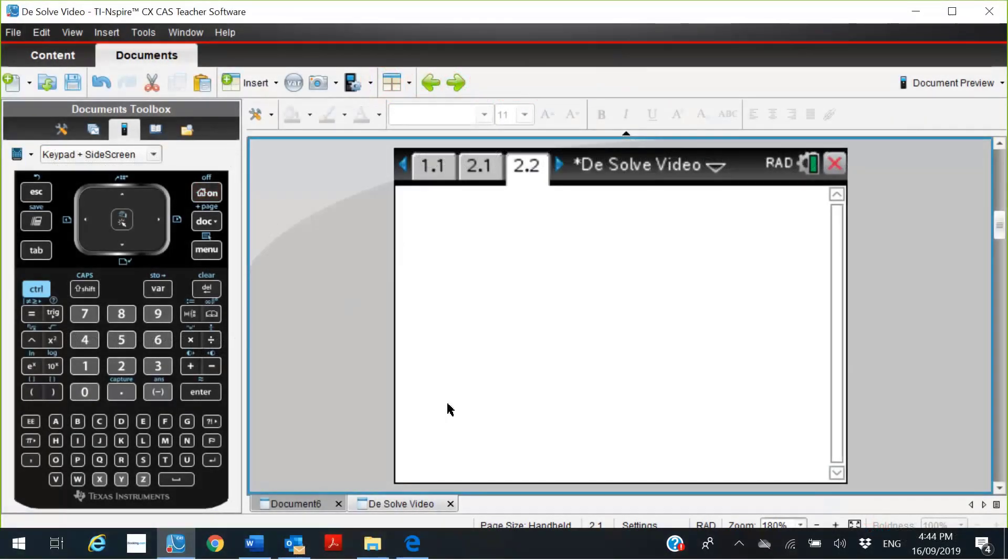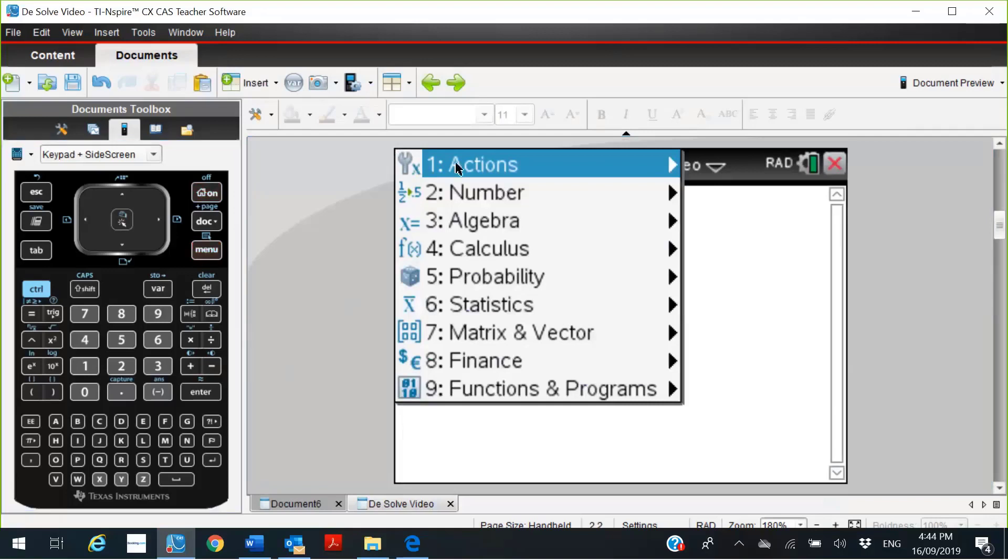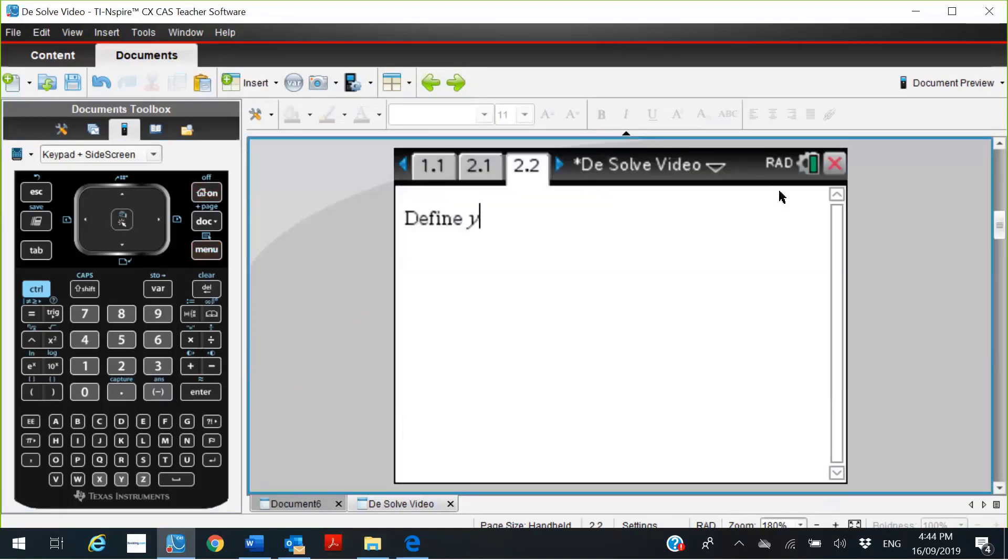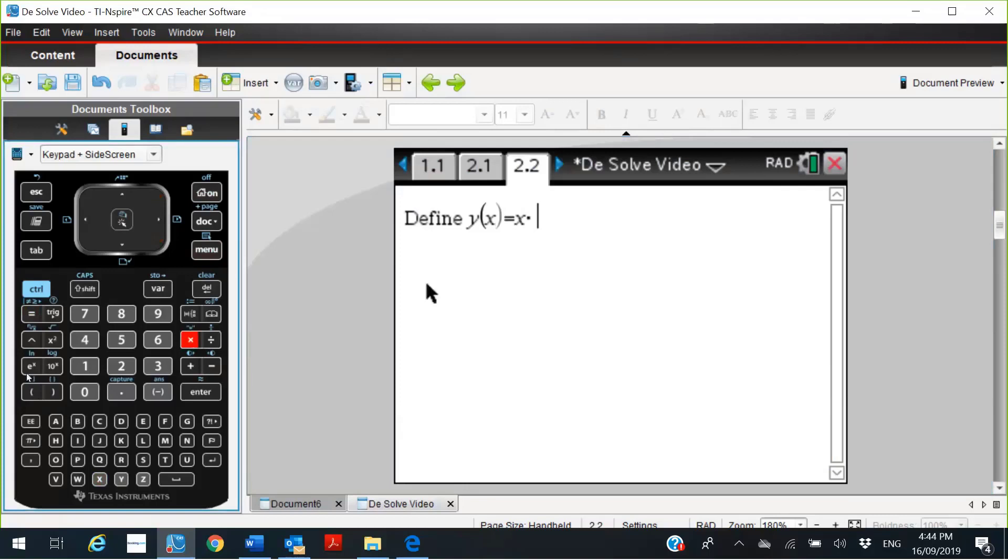Let's define our variable. We're not going to plot it, so we'll just go menu, actions, define. I'll just call it y of x because it is a function. And it's x times—now we definitely need the times here—e to the power of minus 3 times x. Okay.